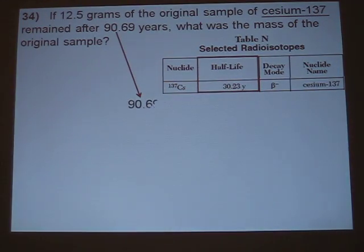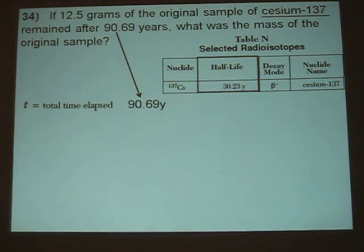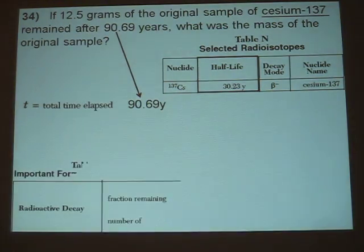Then they mention that 90.69 years went by. We call this little t, or the total time elapsed. You can find this information on the back page of your reference table, Table T.